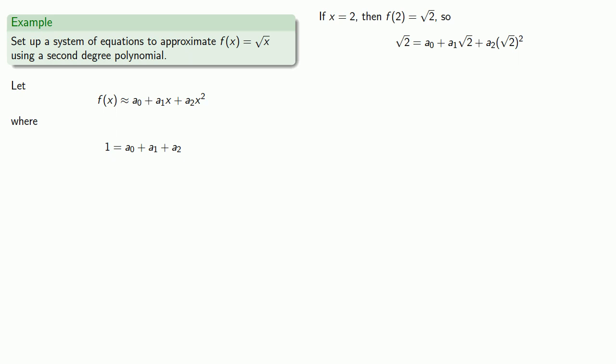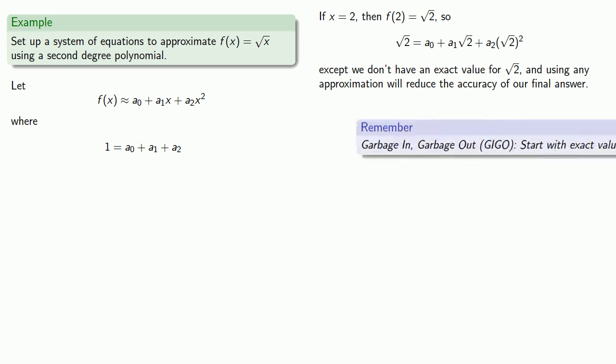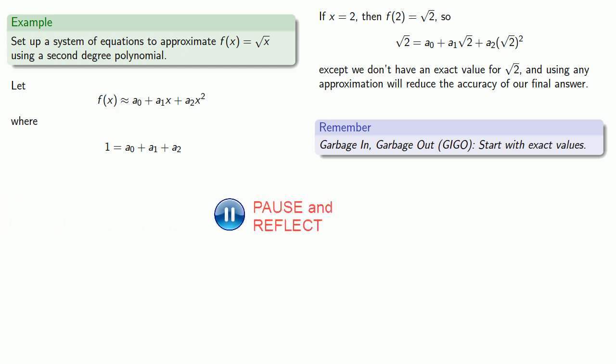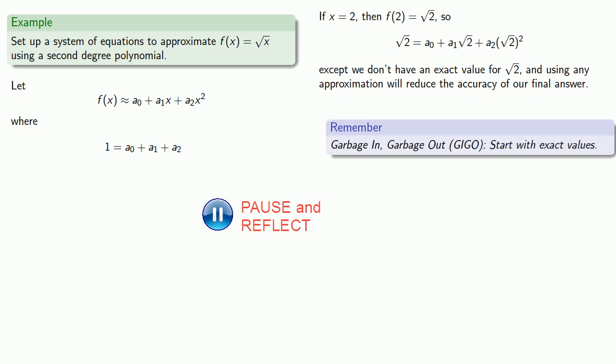Except there's just one problem. We don't have an exact value for √2, and using any approximation will reduce the accuracy of our final answer. Computer scientists have a saying for this: garbage in, garbage out. You should start with exact values. So we want to find a value of x for which we know the square root of x precisely.